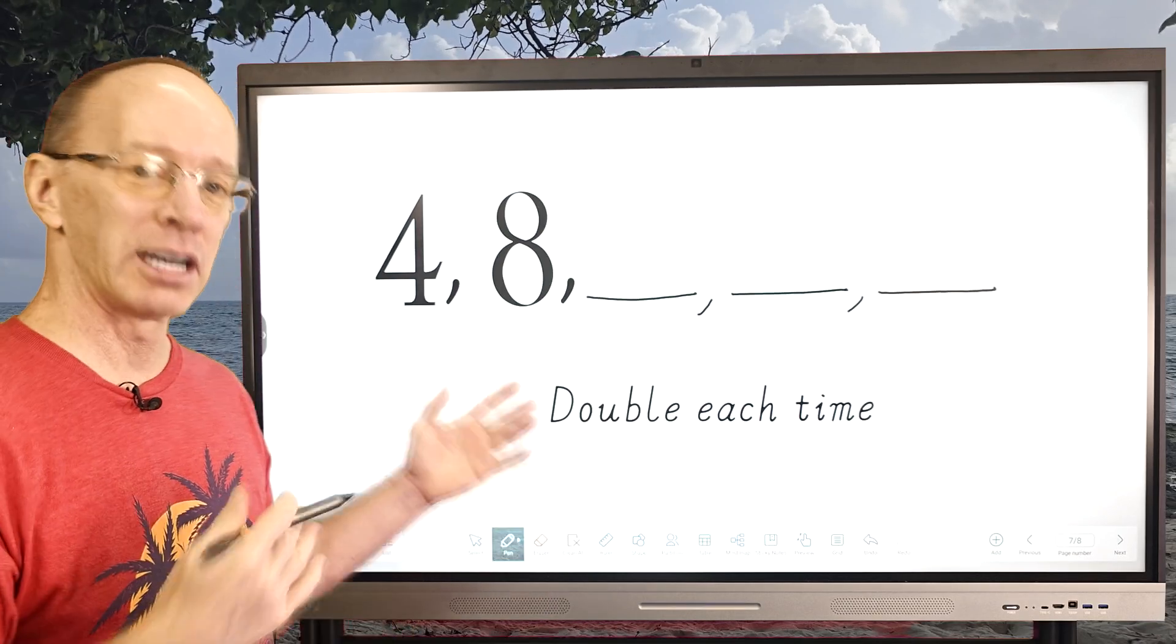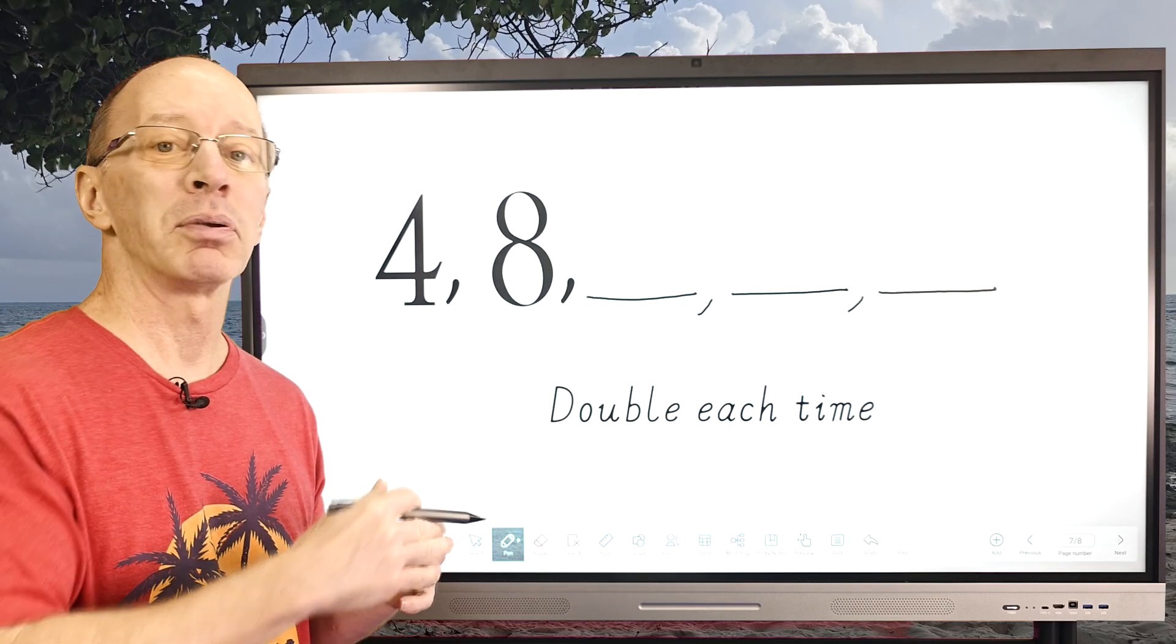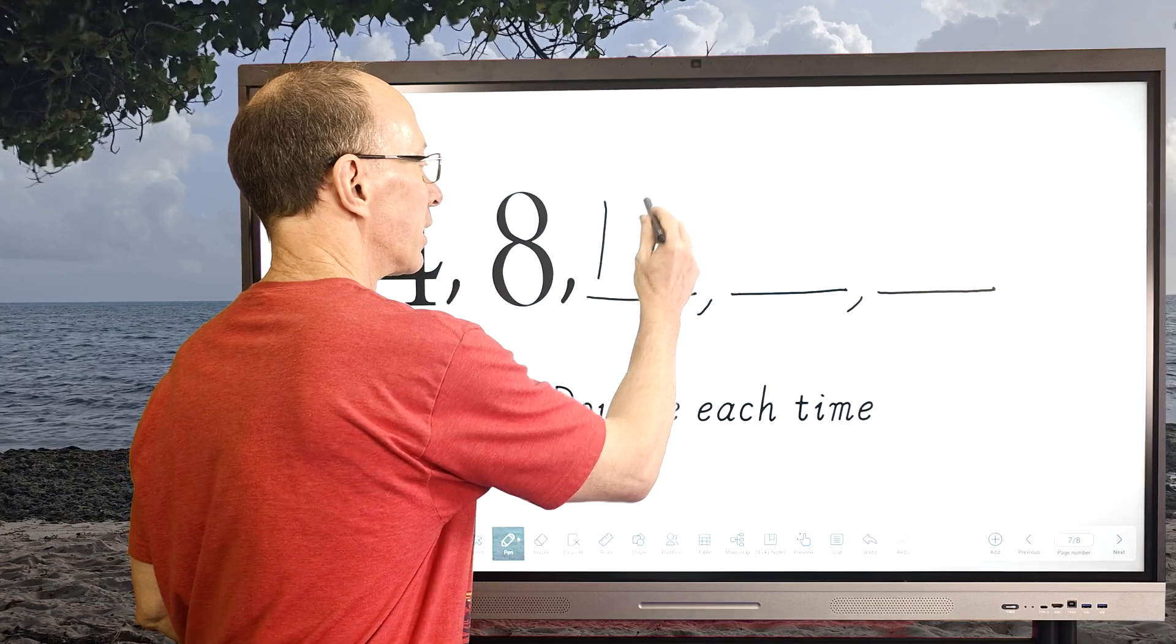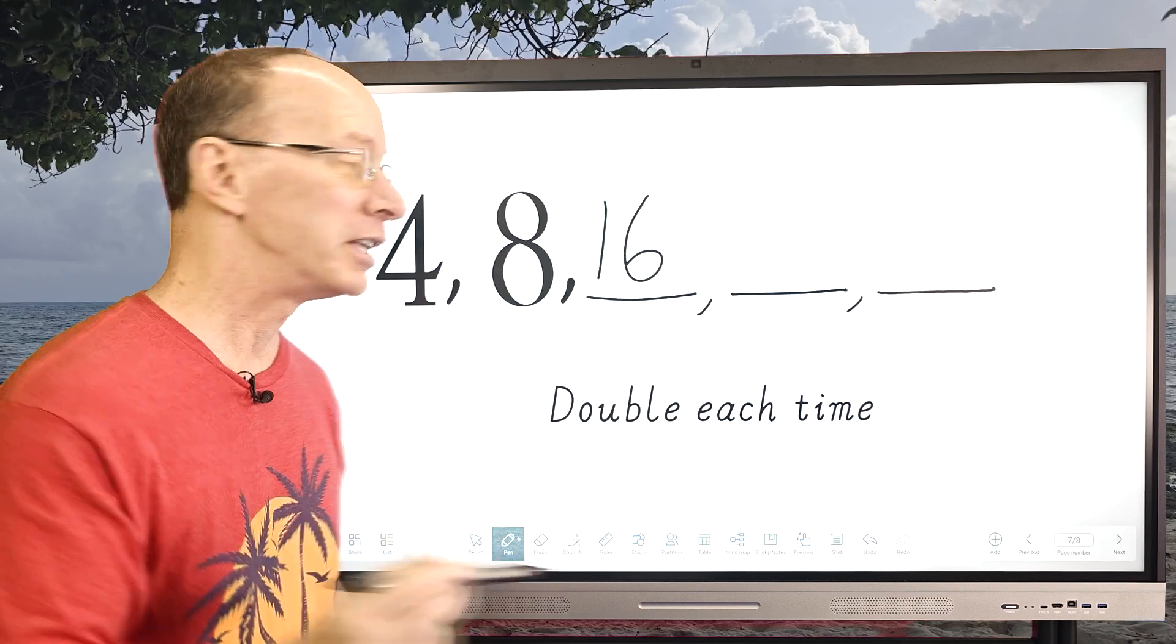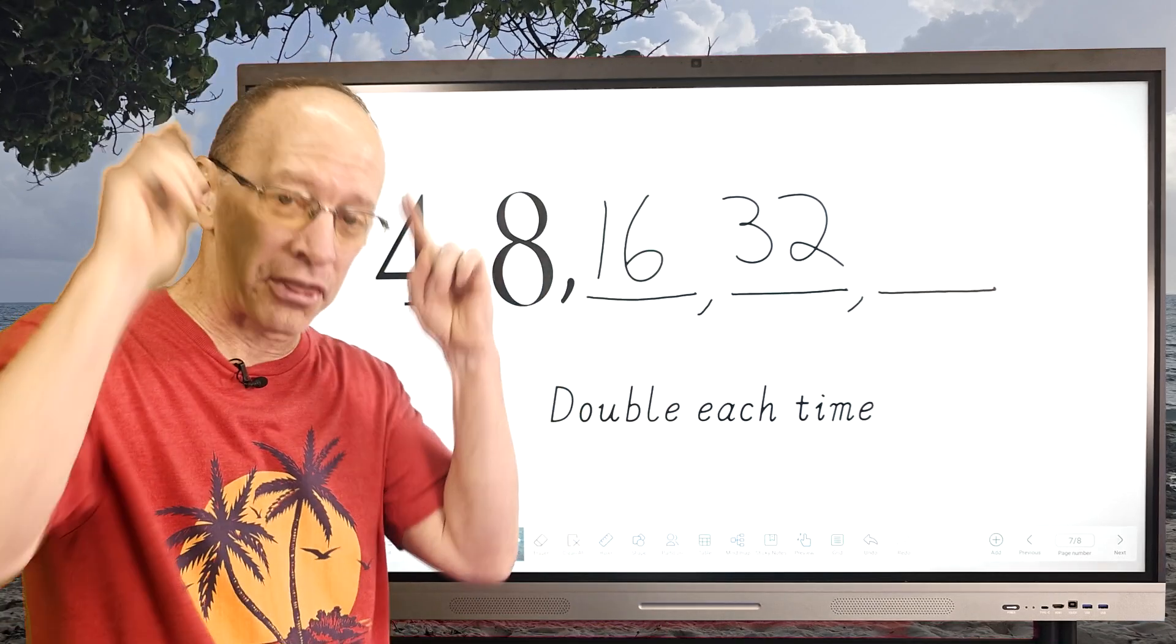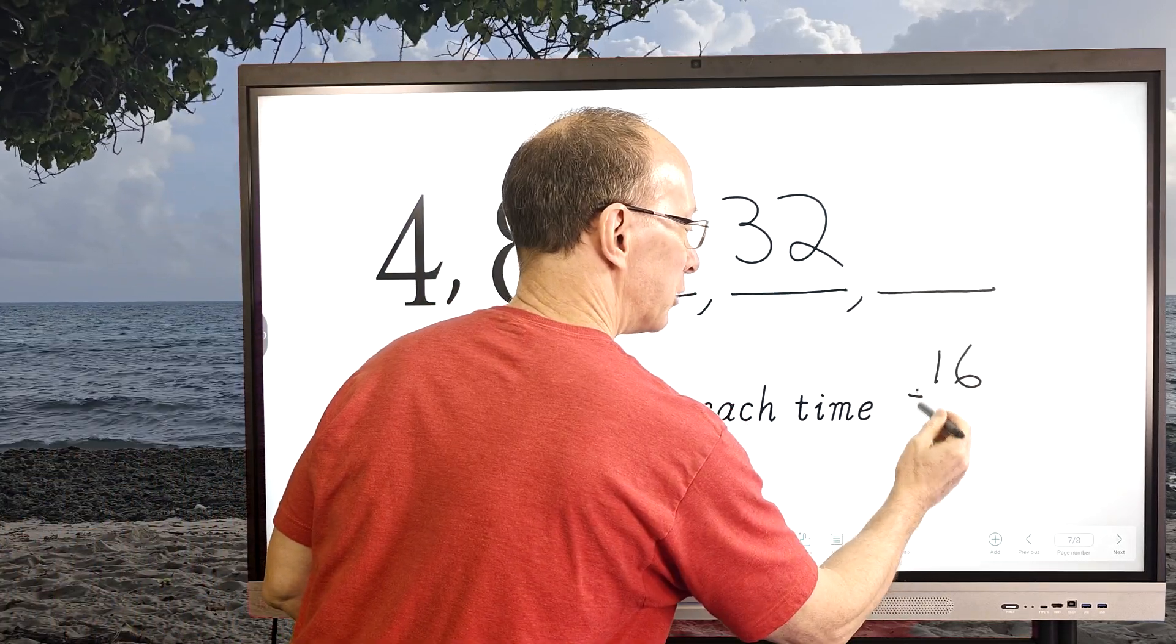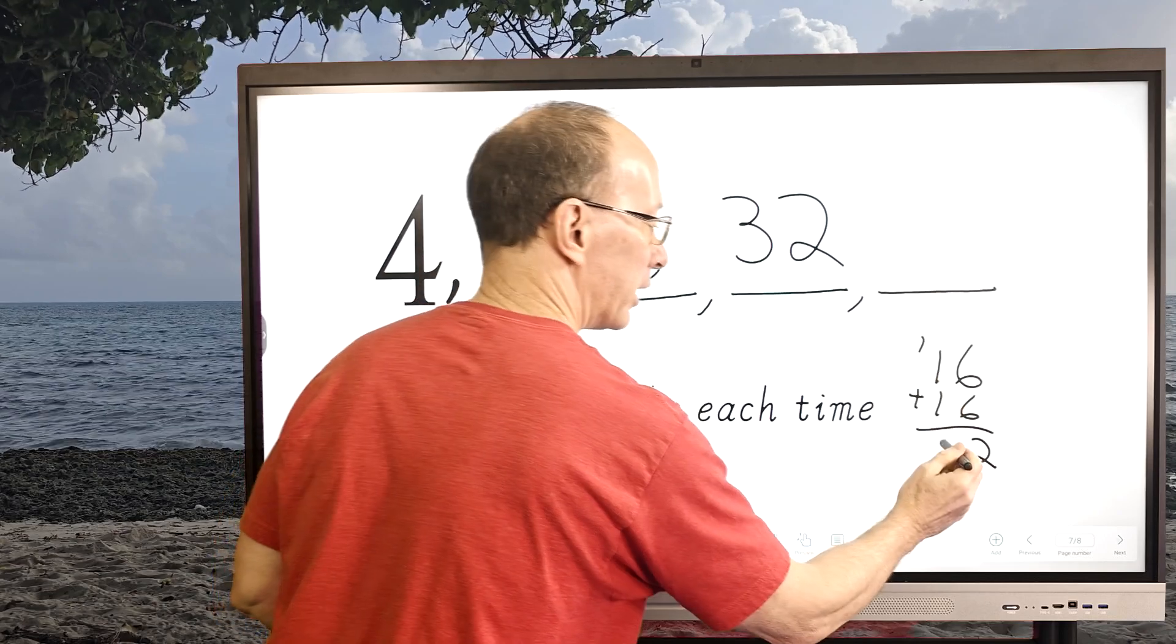All right, so this one says double each time. So basically it's that number plus the same number. So you have four plus four equals eight, eight plus eight equals sixteen, sixteen plus sixteen equals thirty-two. And if you can't do this in your thinker, you could always take the same number and just add it to another number just like that. So you can take sixteen plus sixteen and six plus six equals twelve carry the one. So then you got one, two, three. All right.